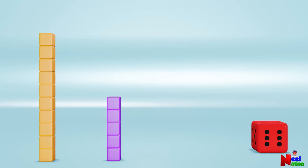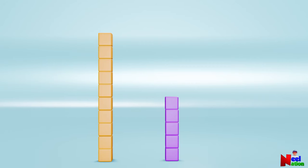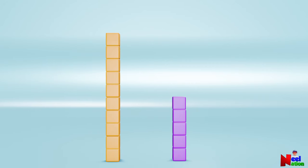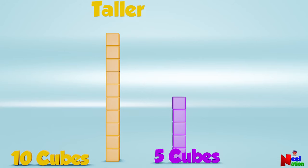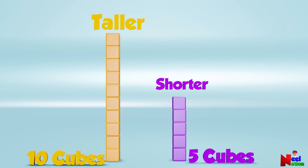Now, can you tell me which tower is taller and which is shorter? Yellow. Yes, you are right. The yellow tower is ten cubes tall. The purple one is five cubes tall. So we can say that the yellow tower is taller than the purple tower.